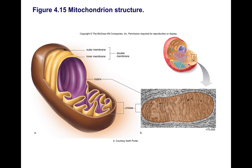Also, if any of you are going into a genetics field — say, forensic work — you might want to know that mitochondria have their own DNA and ribosomes. Why is this important? It turns out that mitochondrial DNA is inherited only from the mother, and this opens many possibilities for genetic testing work.